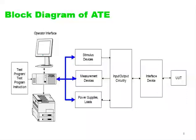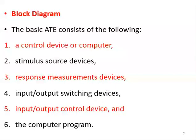The input/output circuitry is connected to three blocks: stimulus devices, measurement devices, and power supply with loads. The stimulus supplies the signal that triggers the ATE into action. When the stimulus is applied, measurement devices take data from the device under test. These all feed into the CPU — the central processing unit of the ATE — which runs a program and can display results on a monitor or send them to a printer for a hard copy.